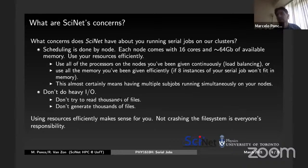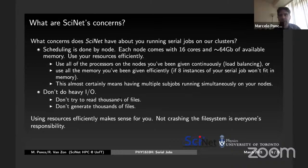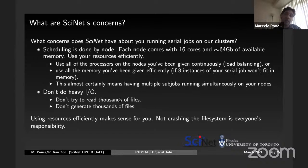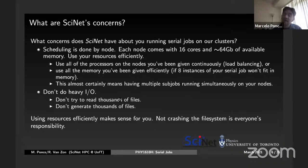Each node comes with 40 cores on Niagara — physically 40 cores, 80 with hyperthreading, and 200 gigabytes of RAM. On the teach cluster it's 16 cores and approximately 64 gigabytes of memory. You should be utilizing, especially on Niagara, all these cores in maximum capacity. Use all the processors on the node. There's also the concern of memory-bound programs — if your program is memory bound, maybe you don't need to use all the cores because you're using more memory. This almost certainly means having multiple sub-jobs running simultaneously on your node.